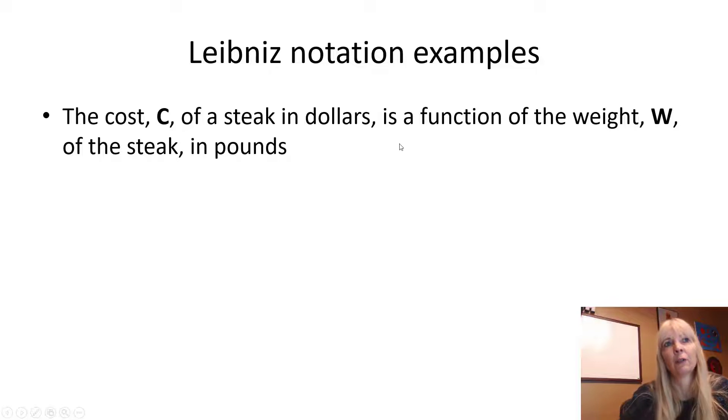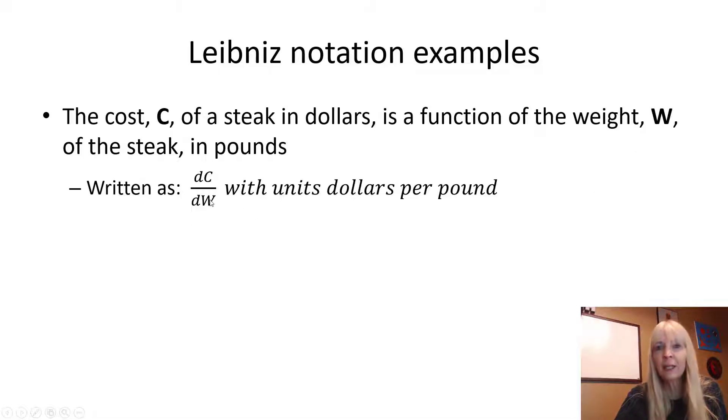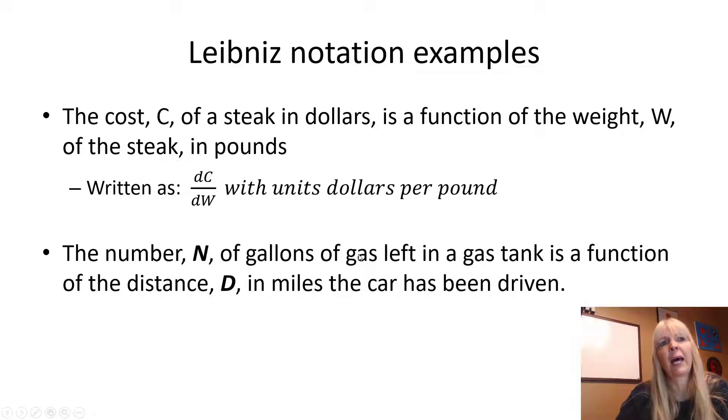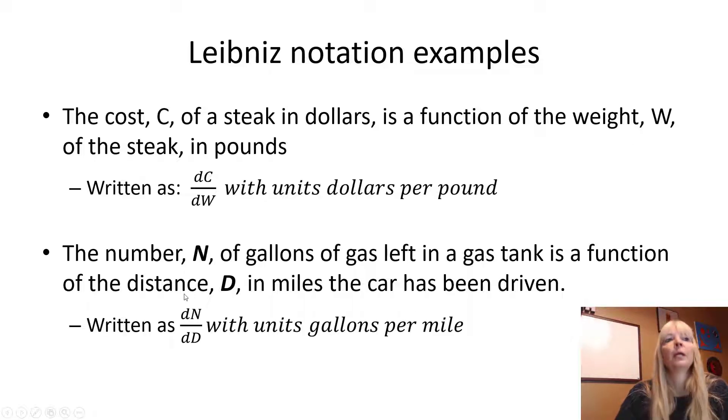Let's say you're given the cost C of a steak in dollars, and it's a function of the weight W of the steak in pounds, and you want to write this in Leibniz notation. It already tells you what the function is, which will always be what's on top, because that's the y value. But if you didn't know, you look for the dependent variable. The cost is going to depend on the weight. So you read this as the change in cost over the change in weight, or the change in dollars over the change in pounds - hence your answer would be in dollars per pound. The number N of gallons of gas left in a gas tank is a function, so I know that goes up top, of the distance d in miles the car has been driven. Again, I don't have to always tell you it's the function because the number of gallons in your car depends on how many miles you've driven. So the change in gallons over the change in miles.